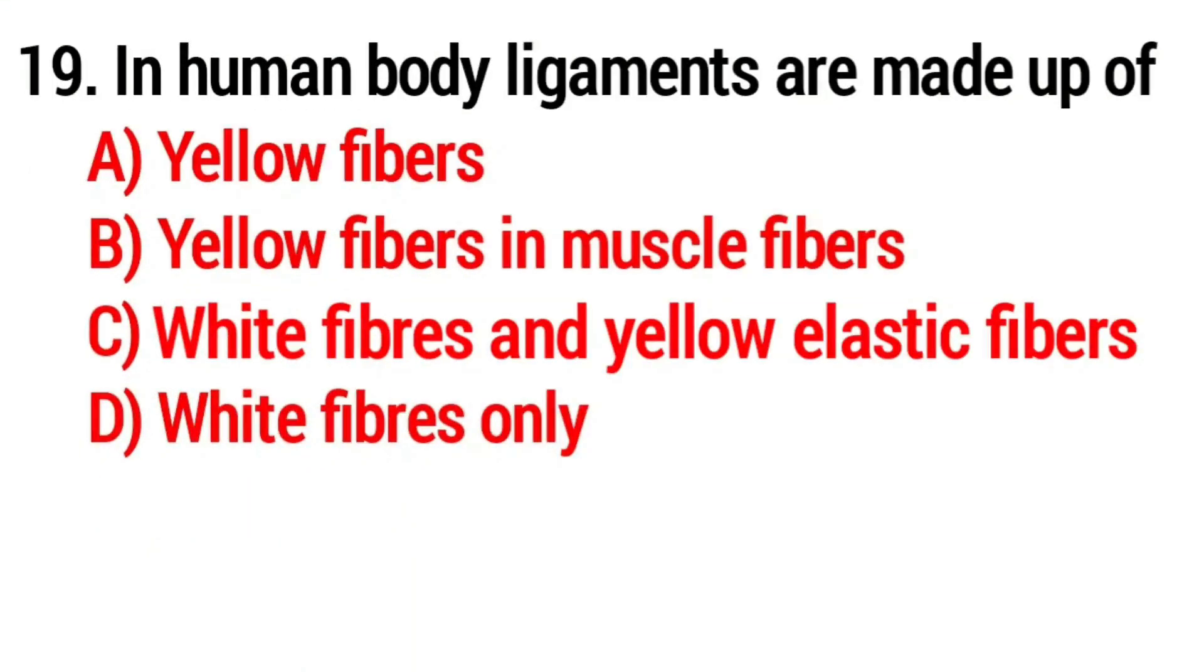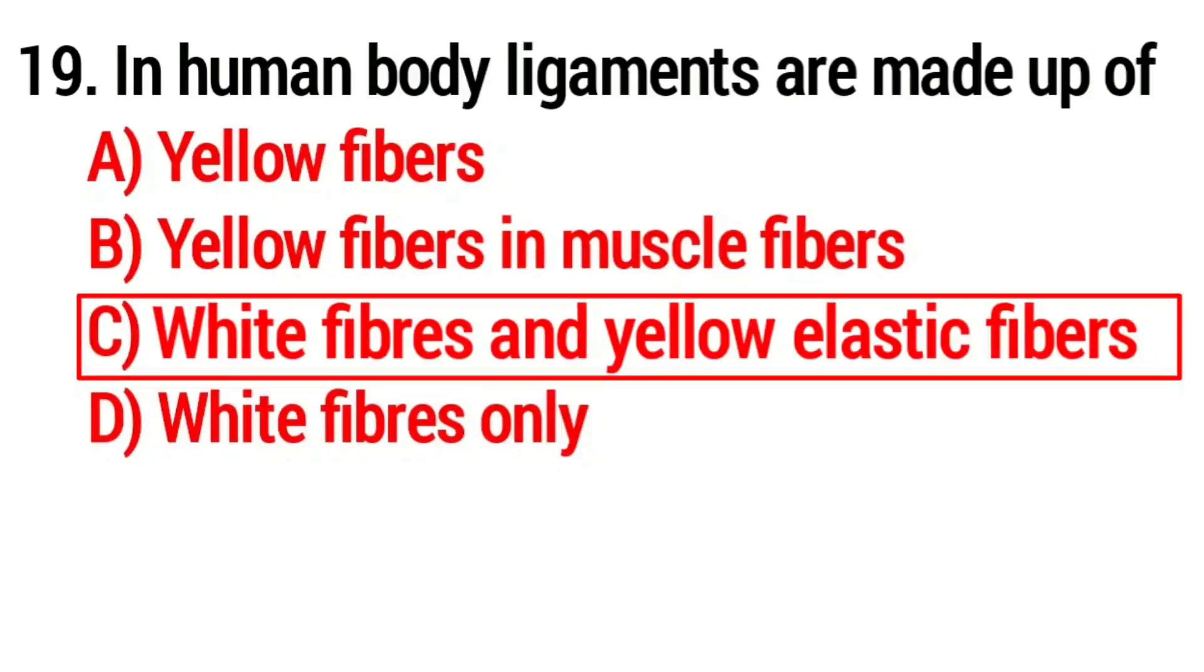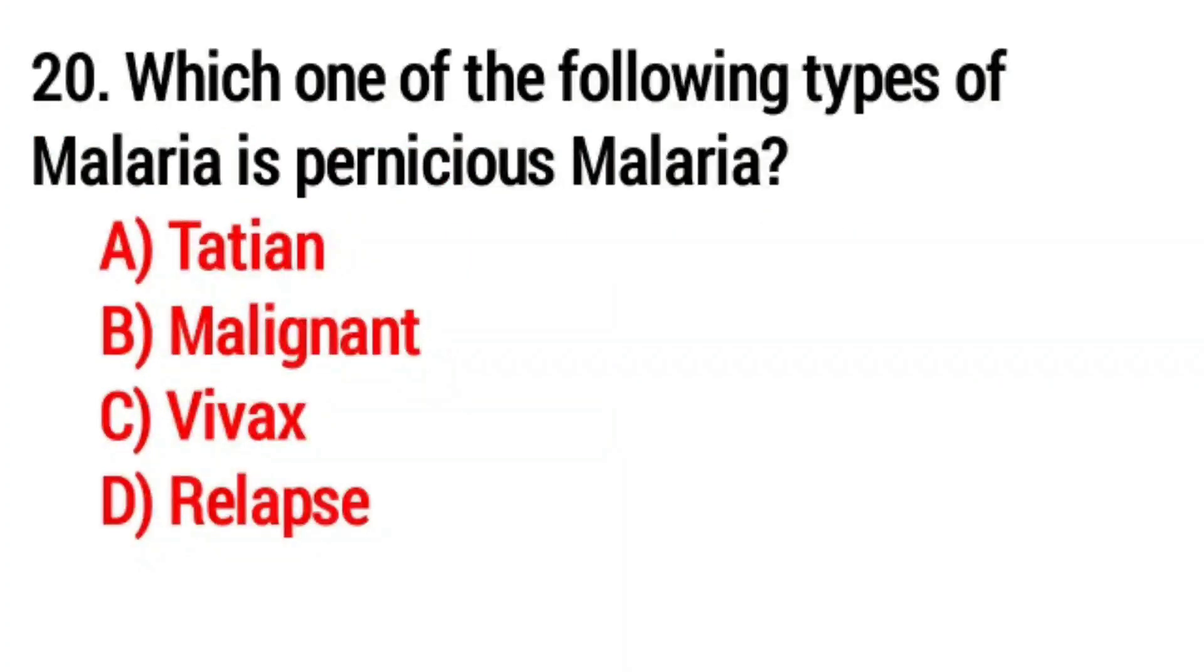Question number nineteen: In human body ligaments are made up of? Answer: option C, white fibers and yellow elastic fibers. Question number twenty: Which one of the following types of malaria is pernicious malaria? Answer: option B, malignant.